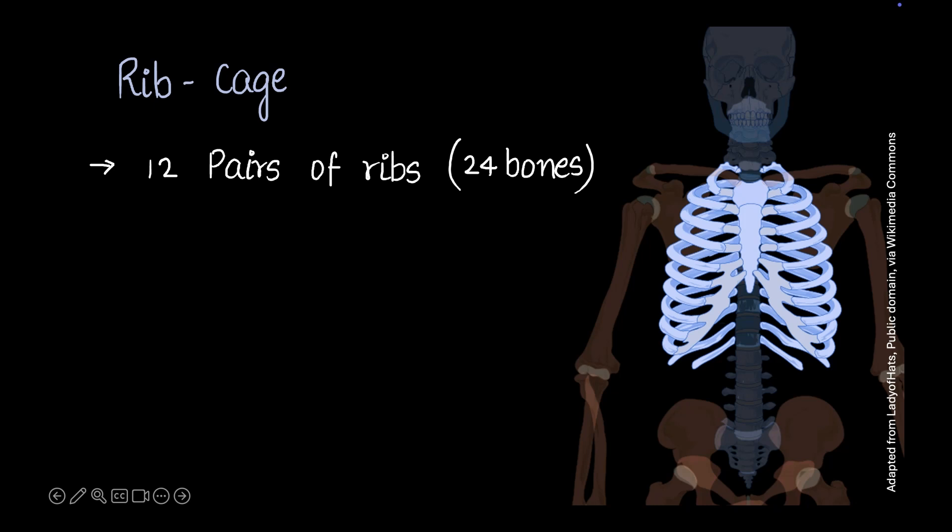You can see that this is one bone and on this side we have another bone. Similarly, this is one bone and on the other side we have another bone. This is one and on the other side we have another one. If you sat to count them, you'd find that you would have 12 of them - 12 pairs, so that's 24 bones.